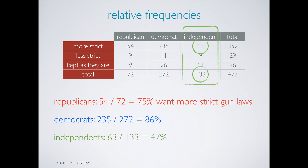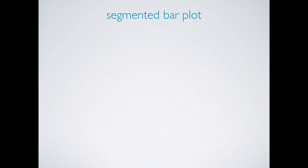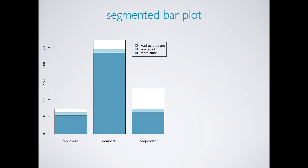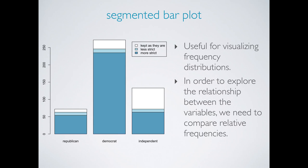We can also use visualization for evaluating this relationship. An obvious choice for visualizing two categorical variables is a segmented bar plot. The heights of the bars indicate the numbers of Republicans, Democrats, and Independents in the sample, and the bars are segmented by color to indicate the numbers of those who want more or less strict gun laws, or those who think gun laws should be kept as they are. Note that these are frequencies — in other words, counts — and not relative frequencies. So while segmented bar plots are useful for visualizing frequency distributions, in order to explore the relationship between these variables, we need a visualization of the relative frequencies.